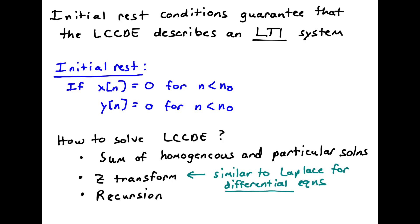To guarantee that our difference equation describes an LTI system, we must assume a specific type of auxiliary condition called initial rest. Initial rest means that if x of n equals zero prior to some time n0, then y of n also equals zero for all times prior to n0. The system is just sitting there doing nothing until an input starts to come in, and initial rest guarantees we have an LTI system.